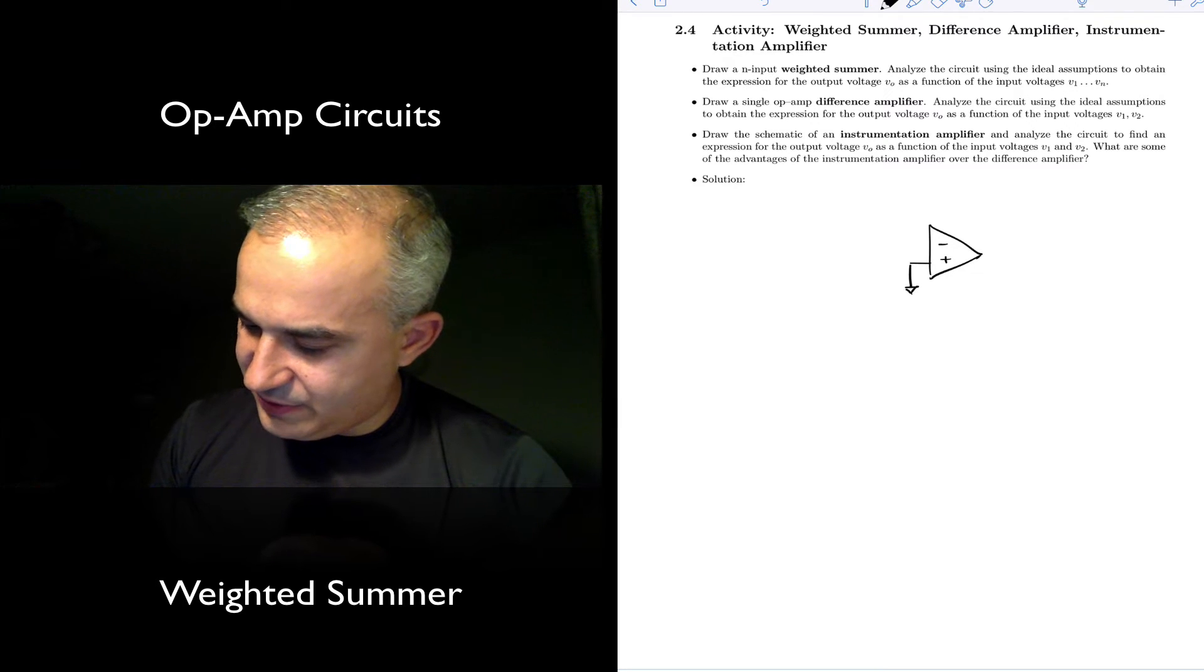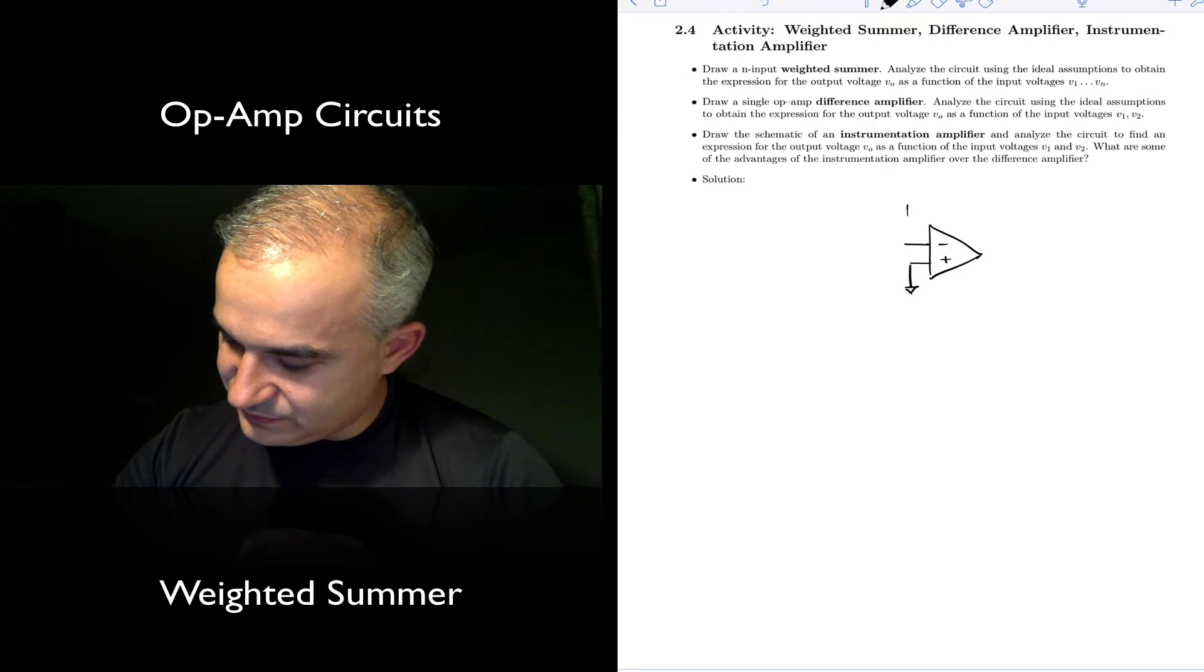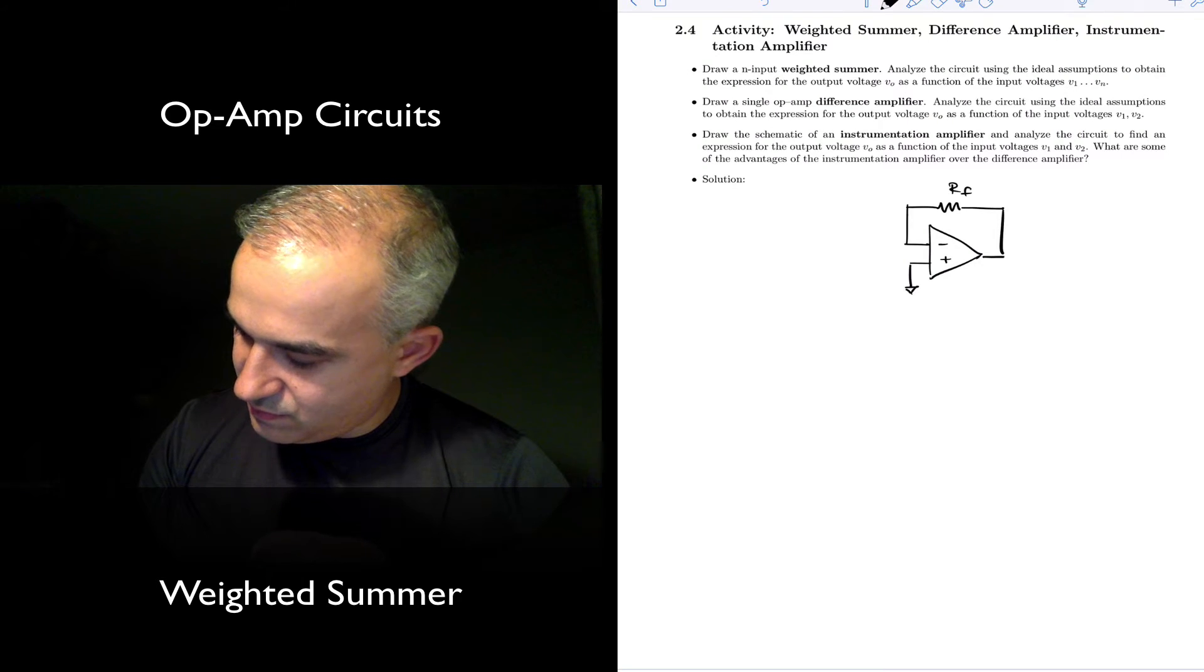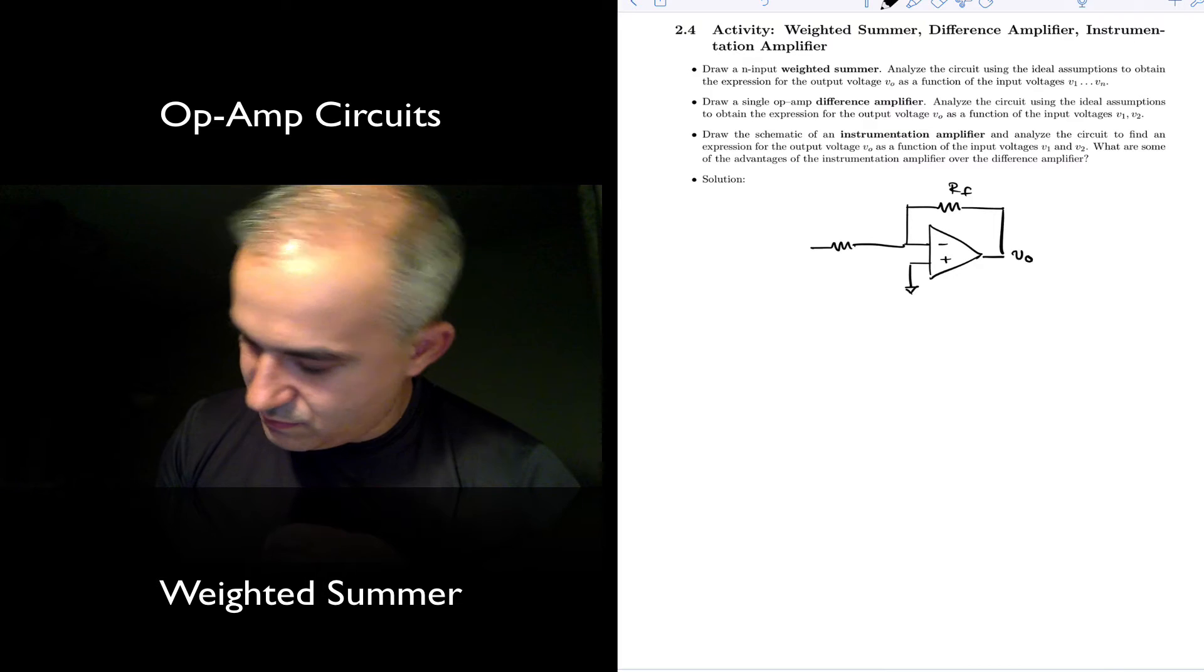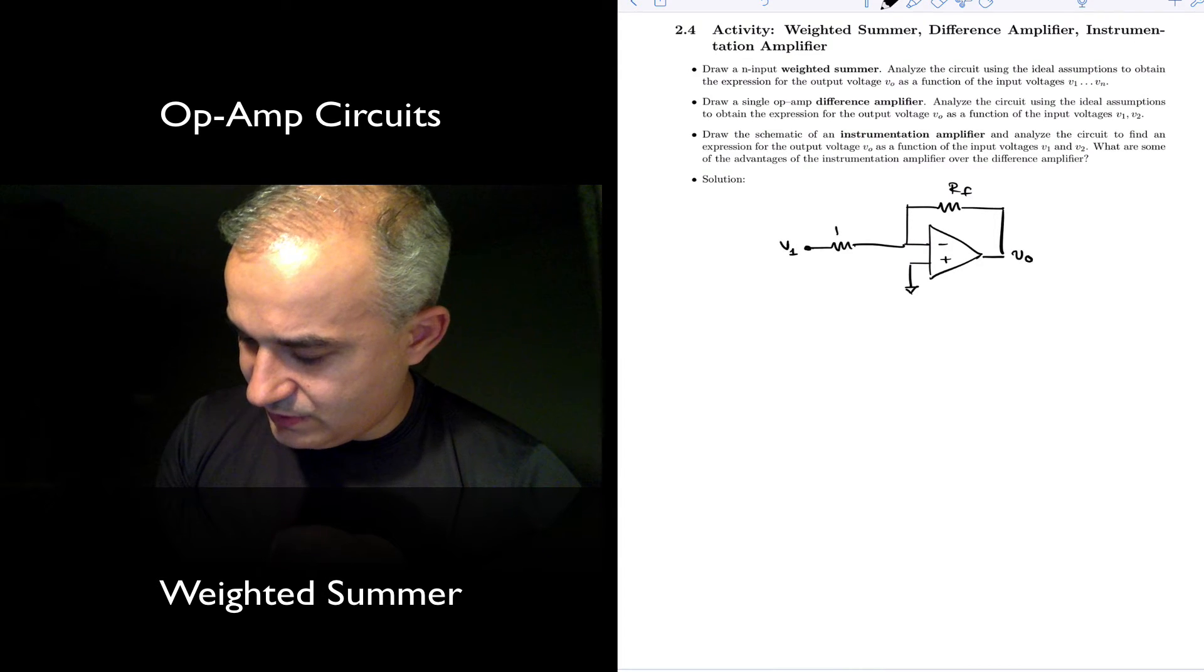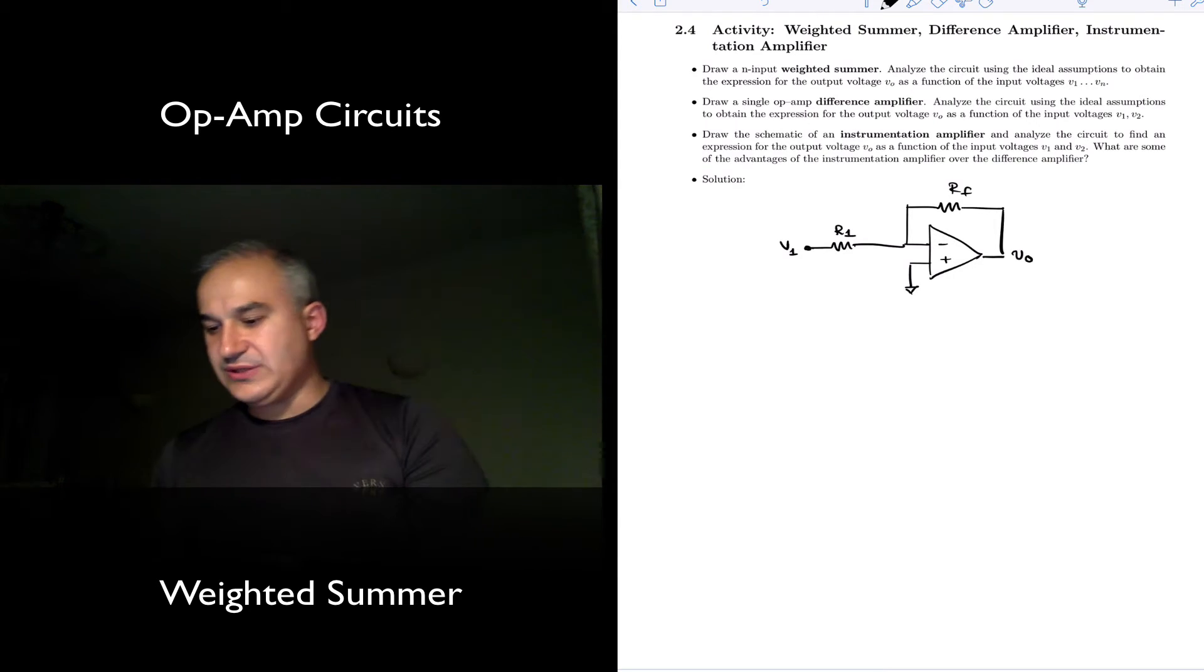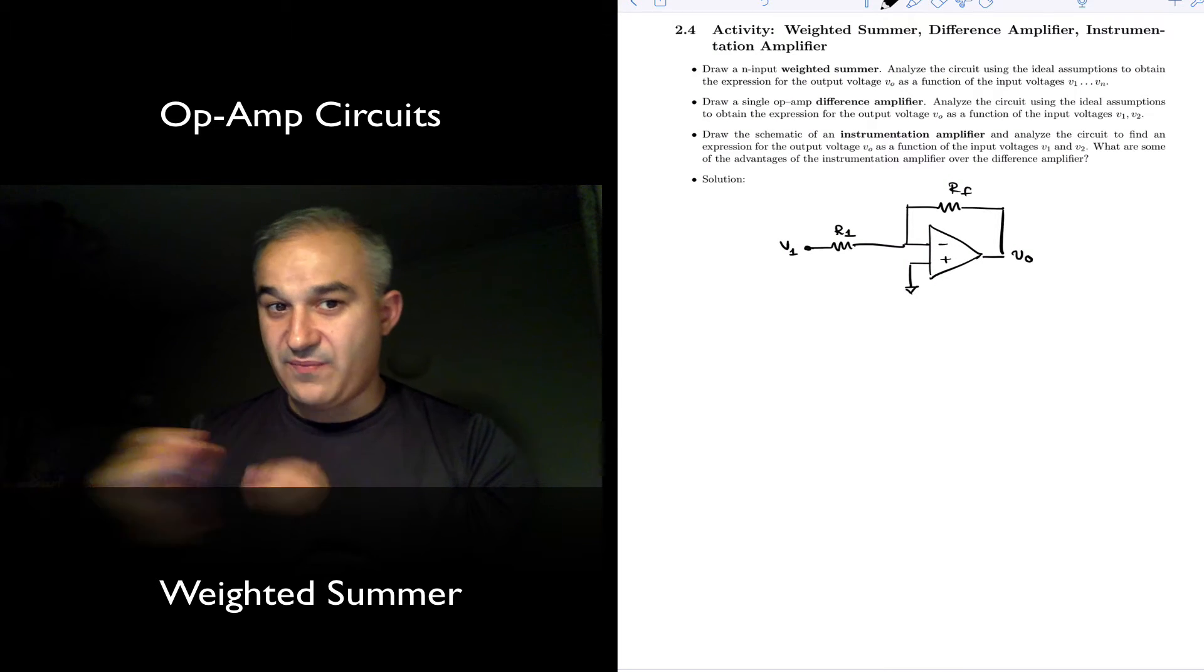One way that you can start thinking about this is that if you start with an inverting amplifier you're already familiar with, and you think about superposition this is the first input R1. What is the output? Well, the output is going to be minus RF over R1 times V1.